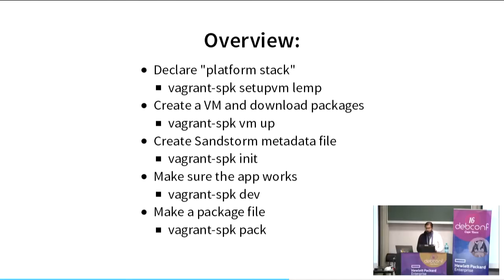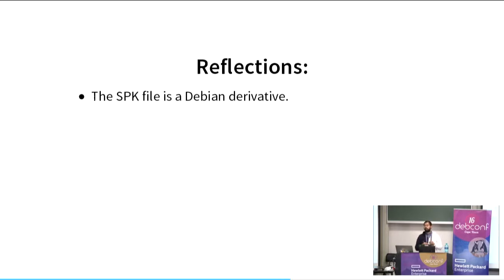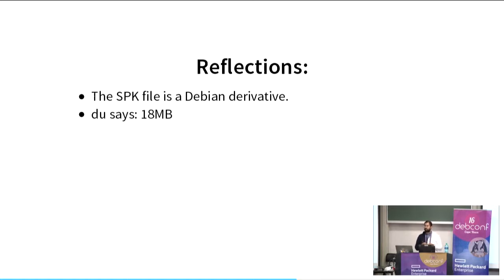One thing worth pointing out: every Sandstorm package is a Debian-derived distro. Etherpad on Sandstorm is a Debian-derived distro — all 57 other apps are too, except for ones that chose to bundle files from a different Linux distro. These packages are also enjoyably small: the Etherpad package is 18 megabytes — though that's compressed with LZMA, so it's more like 60 megabytes uncompressed. But it's also fascinating that people really do use the vagrant-spk tool on Mac OS and Windows, not just on Linux systems.